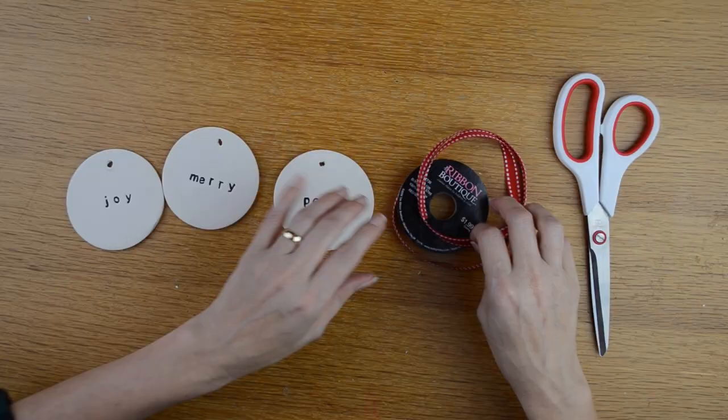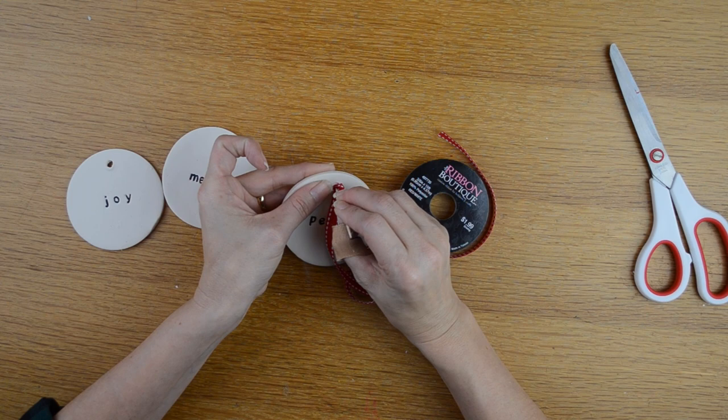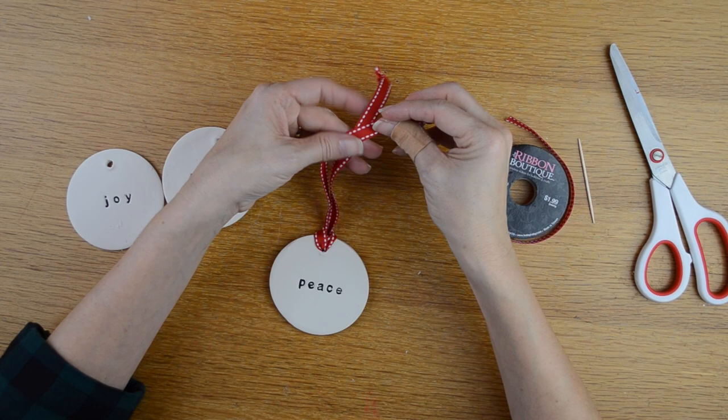The final step is adding some ribbon that way it can hang from the tree and I just have this red and white ribbon from Hobby Lobby and I'm going to go ahead and just stick it through the hole that I pierced through with my toothpick and then tie it off with a knot.